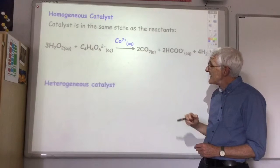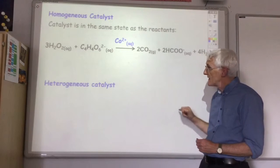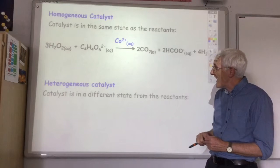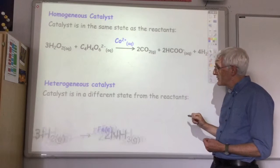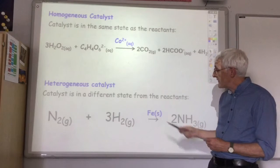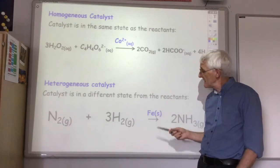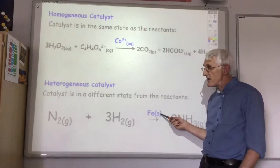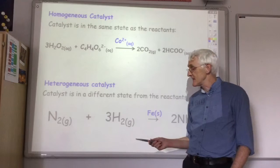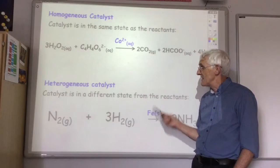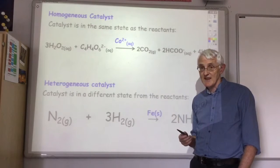You also get heterogeneous catalysts. And in that case, the catalyst is in a different state from the reactants. An example of that would be the use of iron in the Haber process. The iron is solid, but the nitrogen and hydrogen reactants are both gases. So, it's a different state. In that case, it's a heterogeneous catalyst.